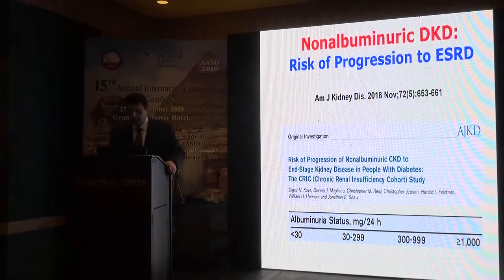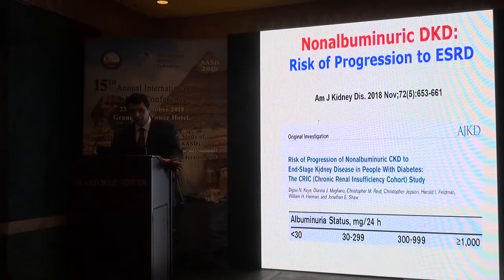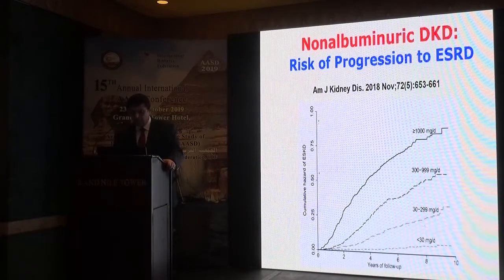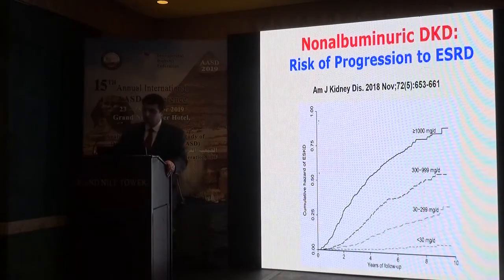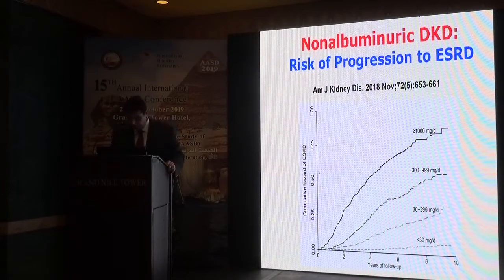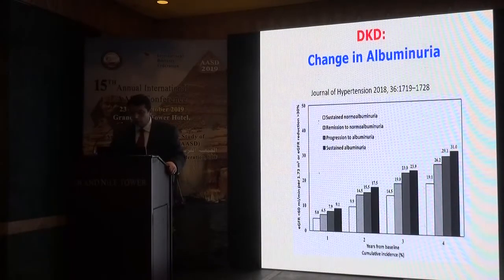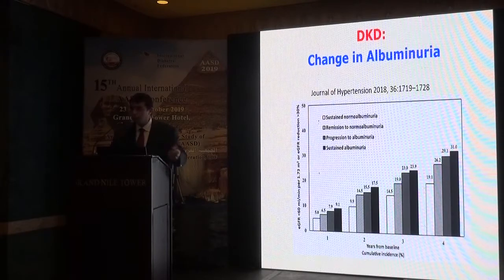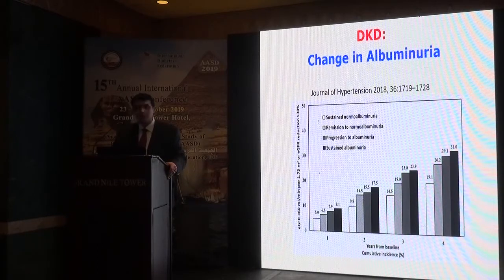Regarding the important entity of non-albuminuric diabetic kidney disease and the risk of progression to end-stage kidney disease: we define normal albuminuria, microalbuminuria, macroalbuminuria, and markedly increased albuminuria above 1,000. They found that with greater increases in albuminuria in the urine, there is a higher cumulative hazard risk of end-stage kidney disease. So albuminuria is a very important factor driving progression. With more years of diabetes duration, there is more sustained albuminuria and macroalbuminuria, representing very high risk for end-stage kidney disease.